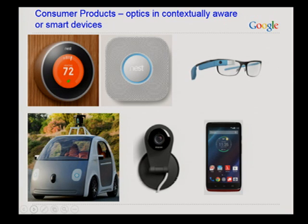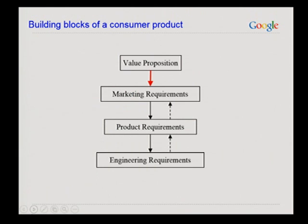So how do we go about building optics for this new kind of devices? Let's look at the building blocks of a consumer product. The value proposition defines what it's going to be used for and how it adds value to somebody's life. It precipitates into marketing requirements, which define what is inside a box. Marketing requirements precipitate into product requirements — essentially one or more architectures that address those requirements. And then it gets drilled down to engineering specifications, where each component is defined precisely, with its limits, testing procedures, and performance.